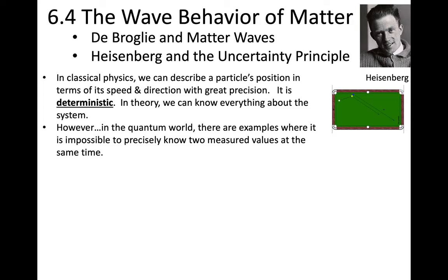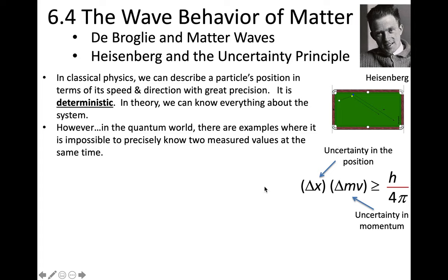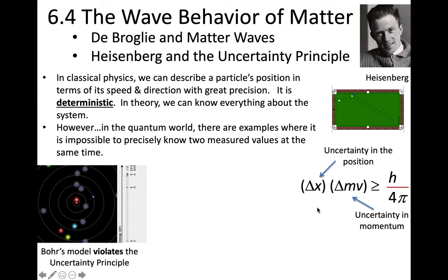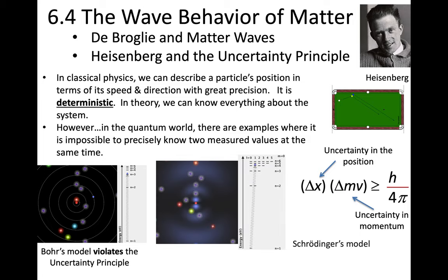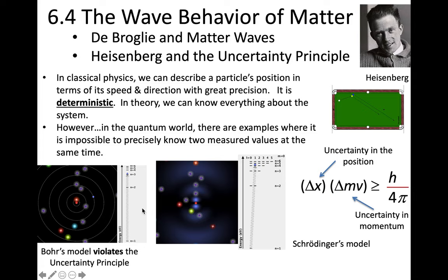Within that section we also looked at contributions from Heisenberg and the uncertainty principle. In classical physics, a particle's position and direction could be known precisely and simultaneously. However, in the quantum world, when we begin to think of things as having a wave description as well, that's not possible. Heisenberg's idea is that the uncertainty in measuring both the position and the momentum must be over a particular threshold value. We didn't do calculations with this, but we saw how that would indicate that Bohr's model violates the uncertainty principle. It's showing both the position of the electron and its energy with precise values simultaneously. Within the Schrodinger model, that's not the case. We still see quantized energy levels, but this description for where the particle is found is quite different.